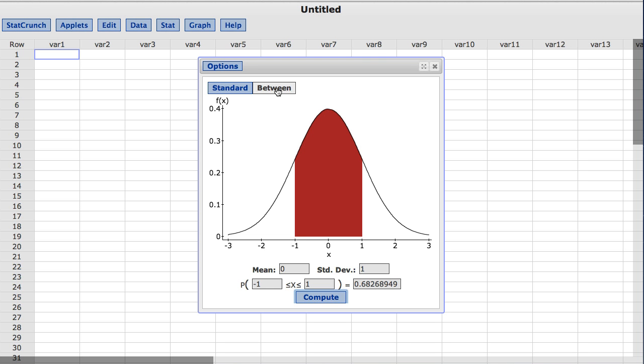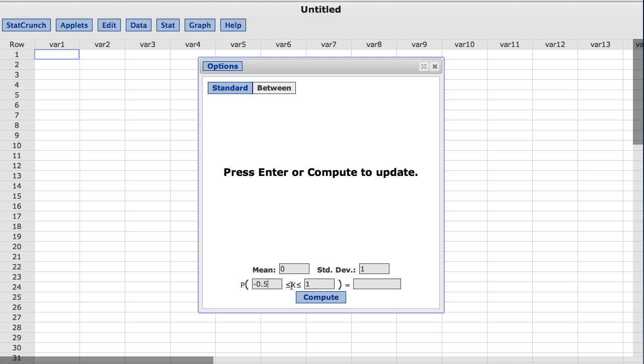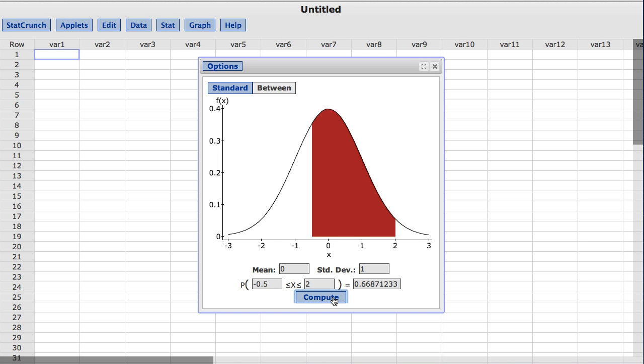Now, I am going to change the first reference value to be negative 0.5 and the second to be 2. The first reference value must always be less than the second one. I will now click Compute. The area between negative 0.5 and 2 is shown in red and corresponds to a probability of approximately 0.67.